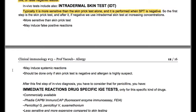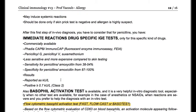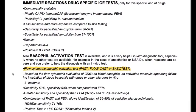After this first step of in vivo diagnosis, for penicillin you have immediate reactions and drug-specific IgE tests available. Basophil activation test is also available and very helpful as an in vitro diagnostic tool, especially when no other tests are available — for example in the case of anesthetics or NSAIDs — or when reactions are severe and you prefer to support the diagnosis with an in vitro test.